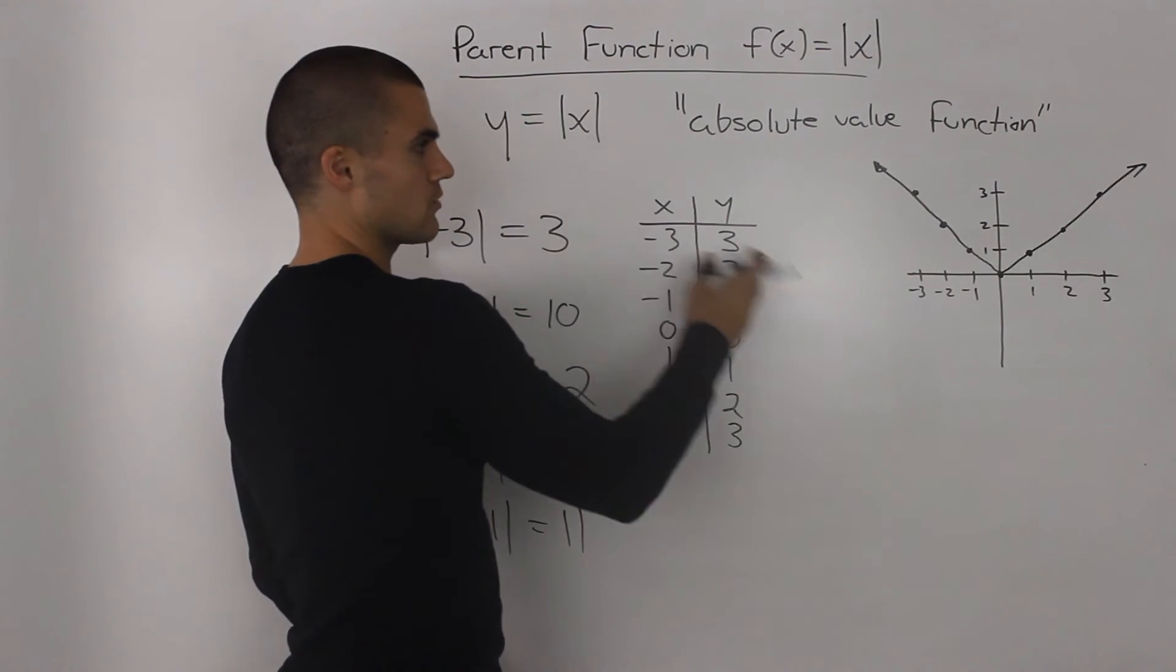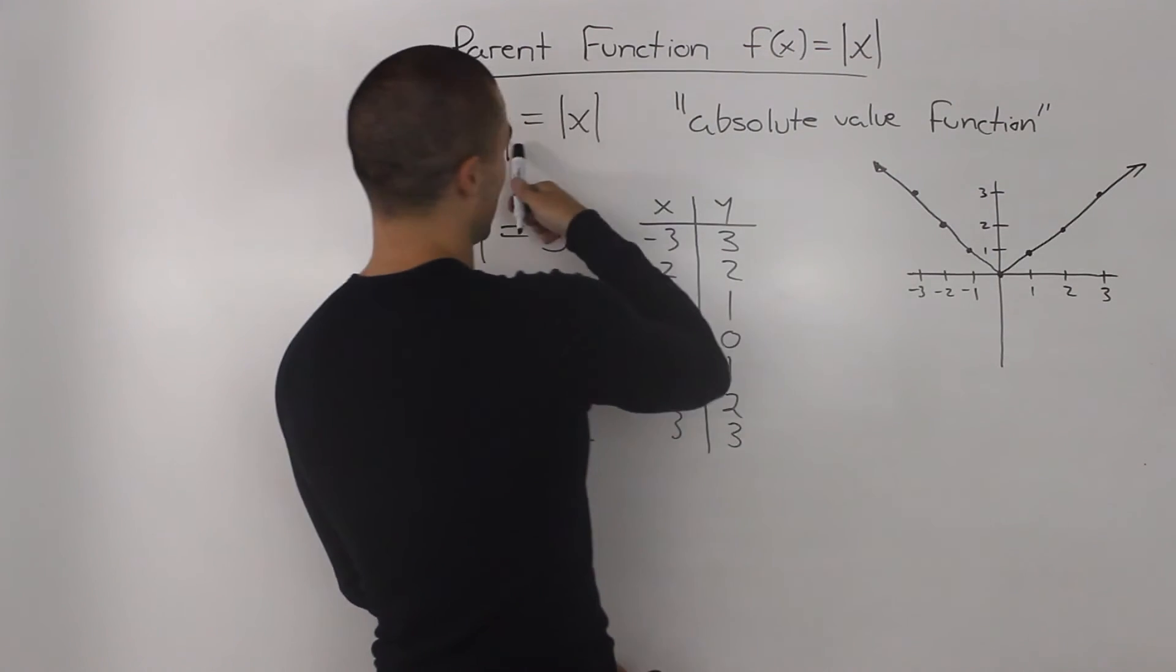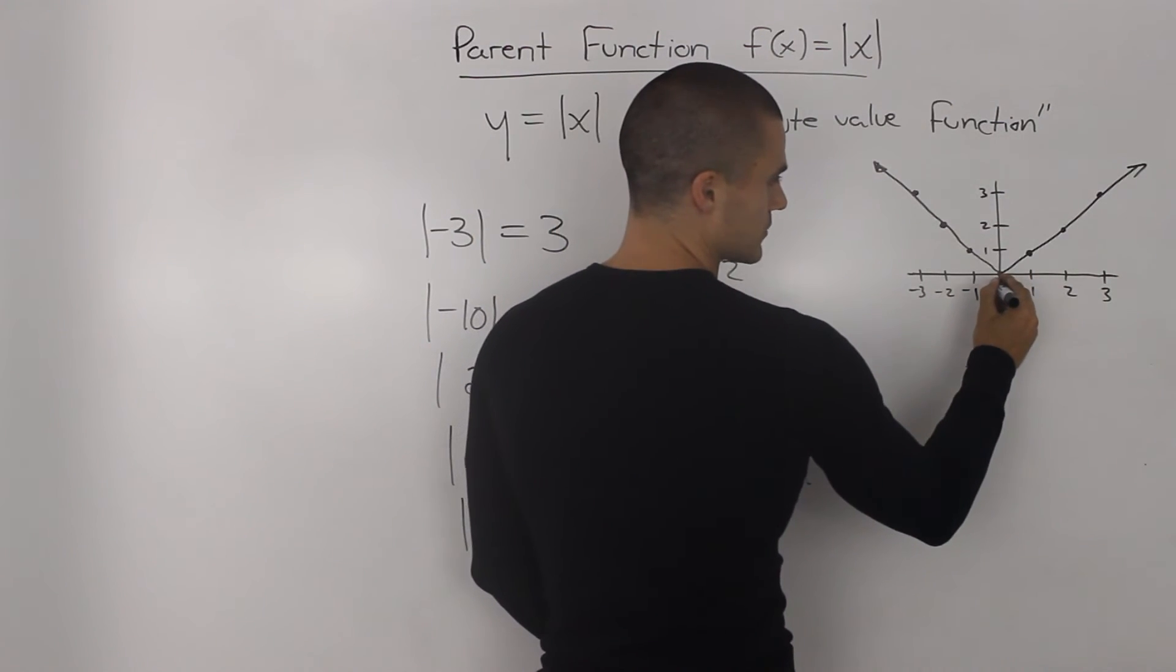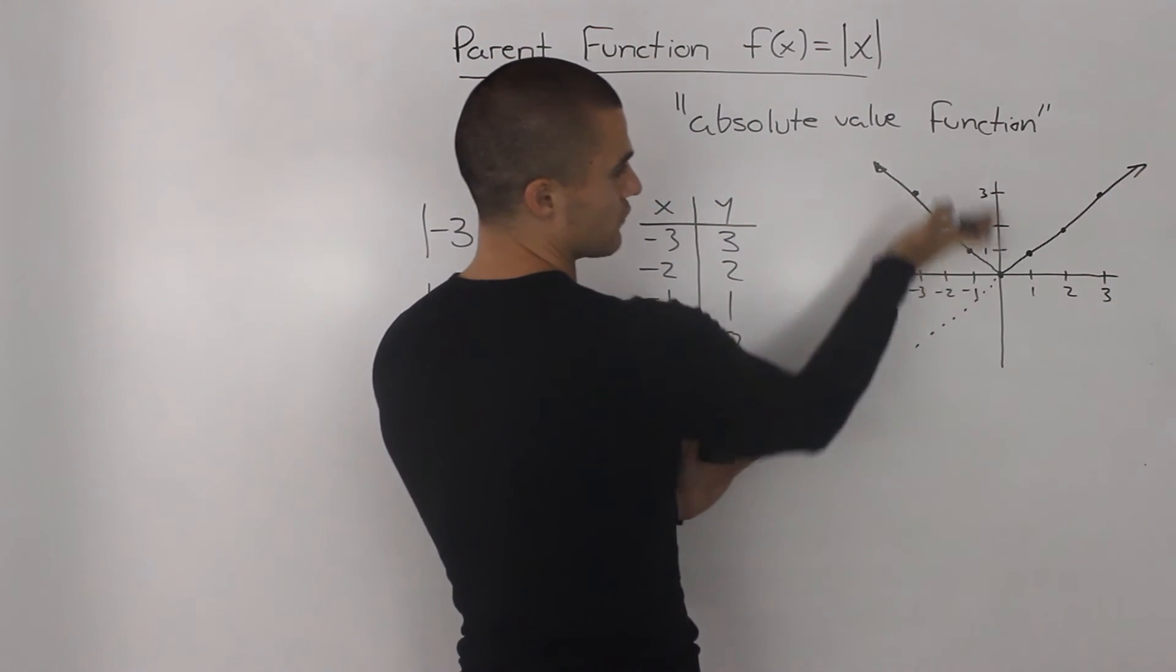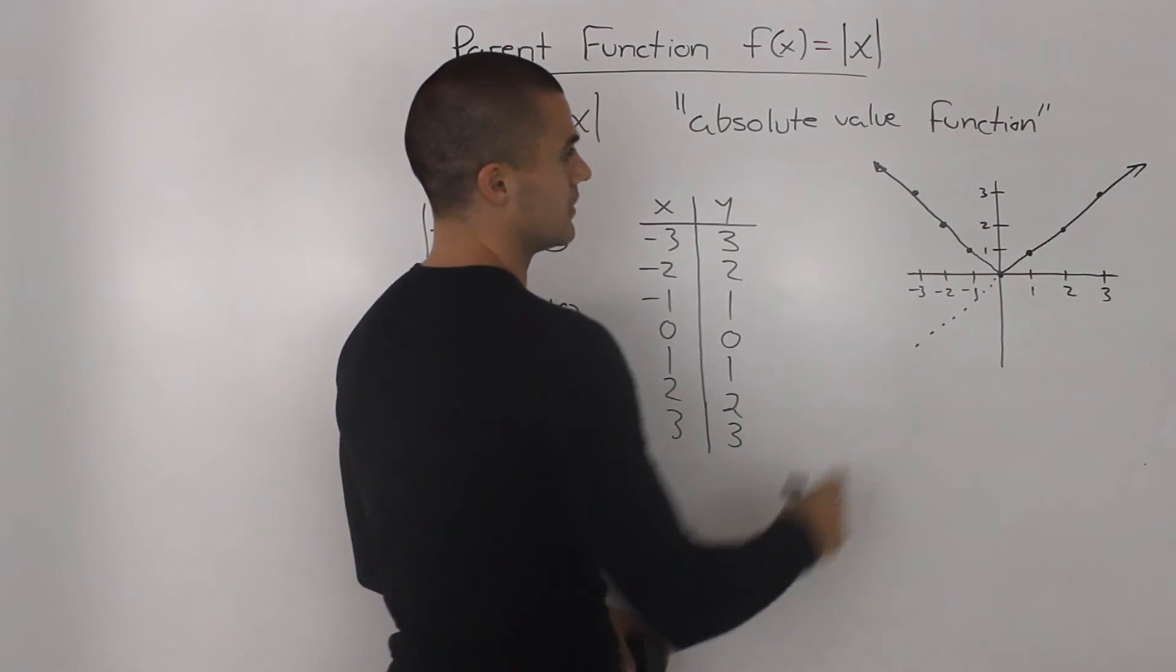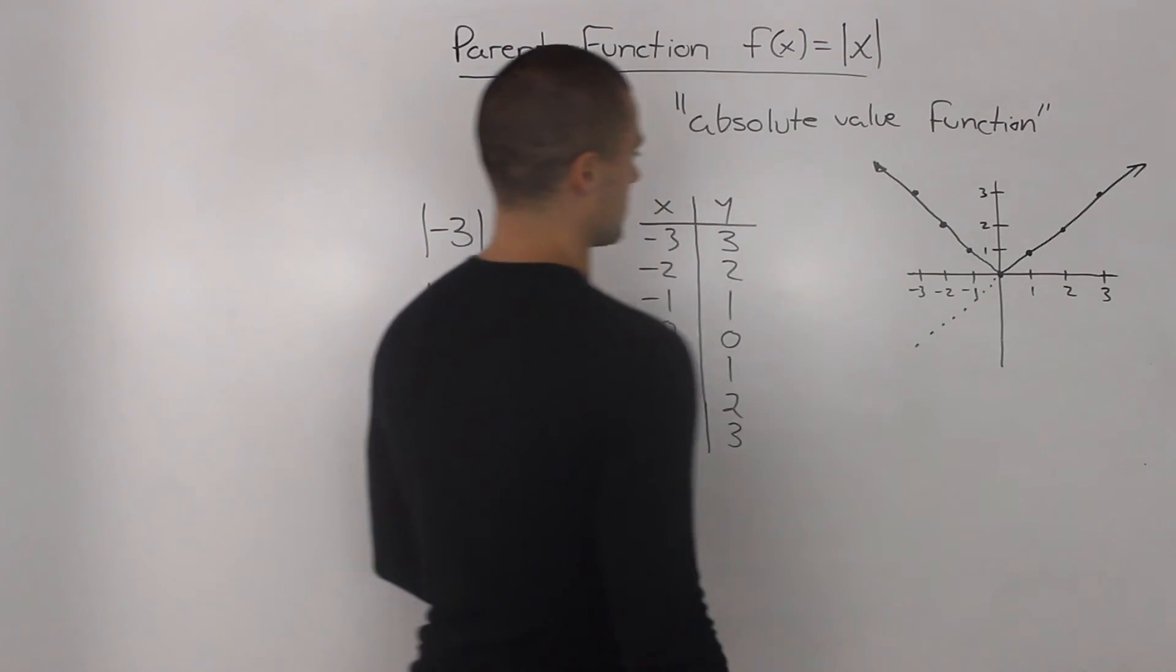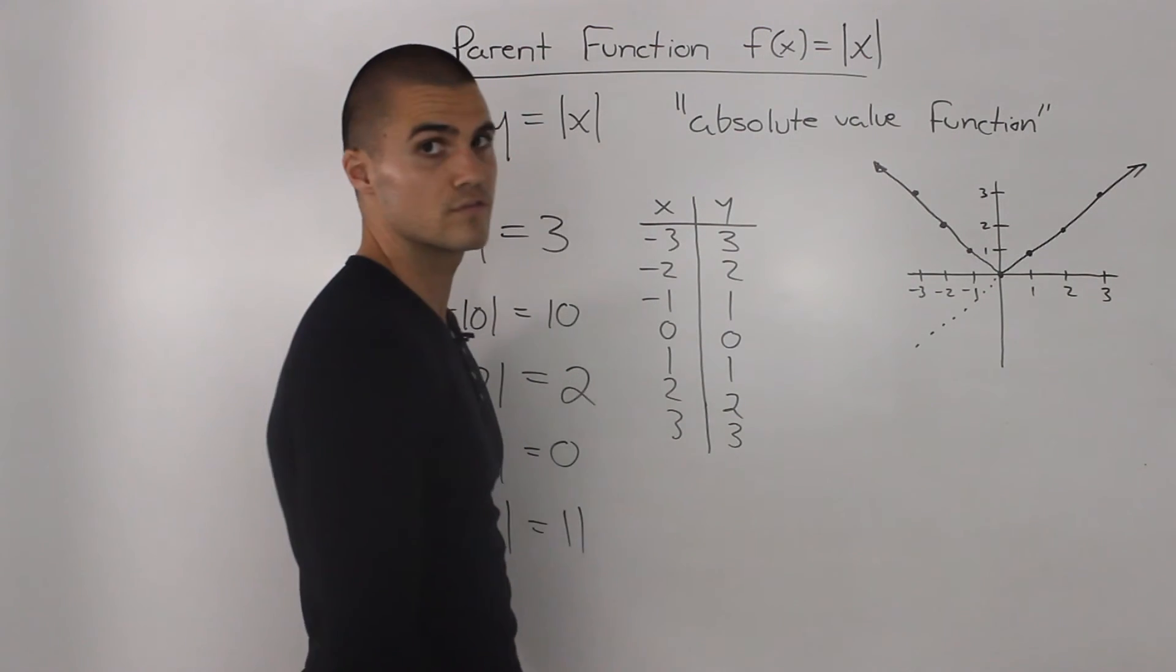Now notice how these are lines, and it's almost like we took the line y equals x. y equals x would extend down here, and then any negative portion of it, we just reflect it up to make it positive. So that's another way you can think about it. But this is the general shape of the graph. You can get that from your table of values.